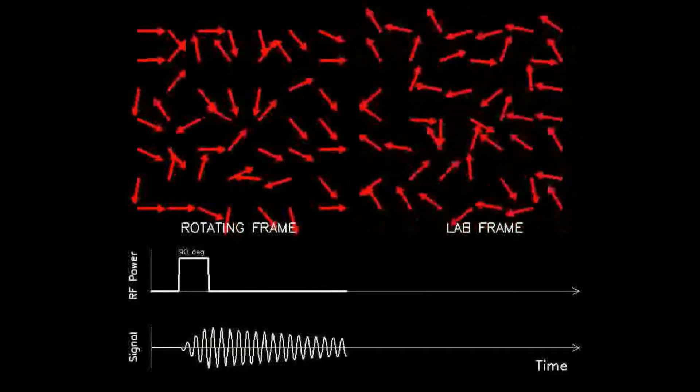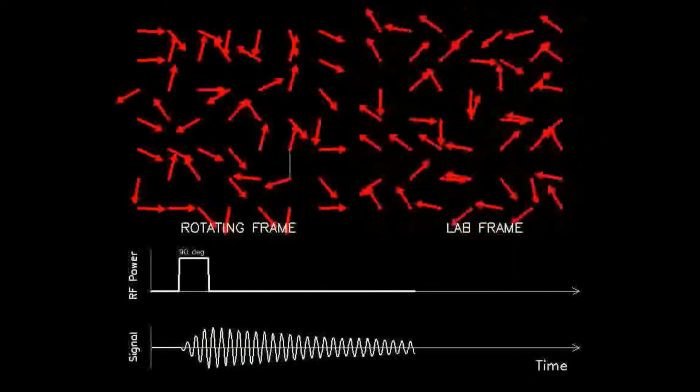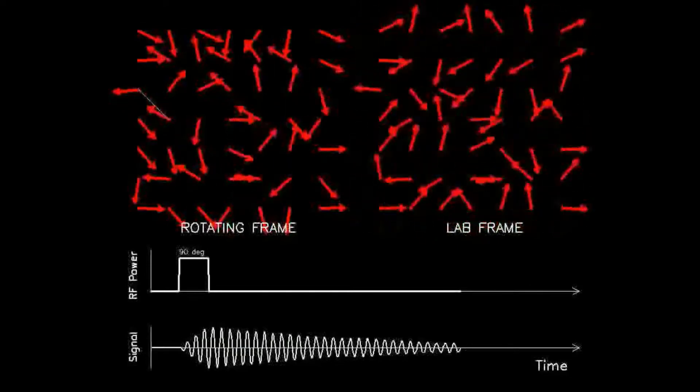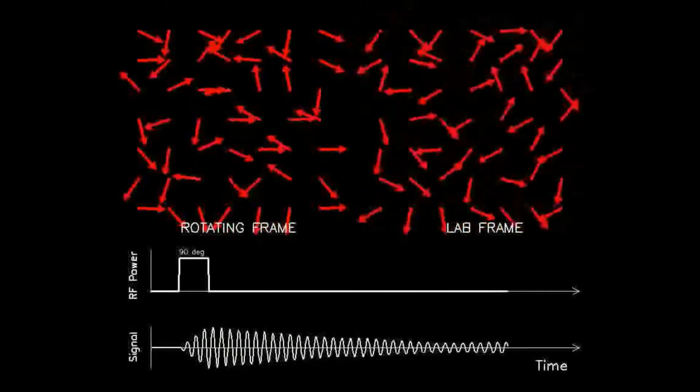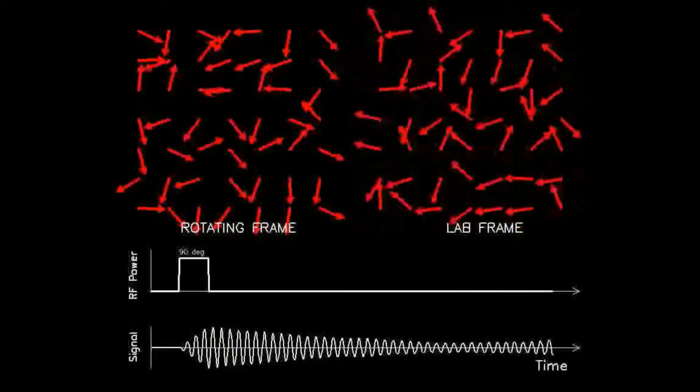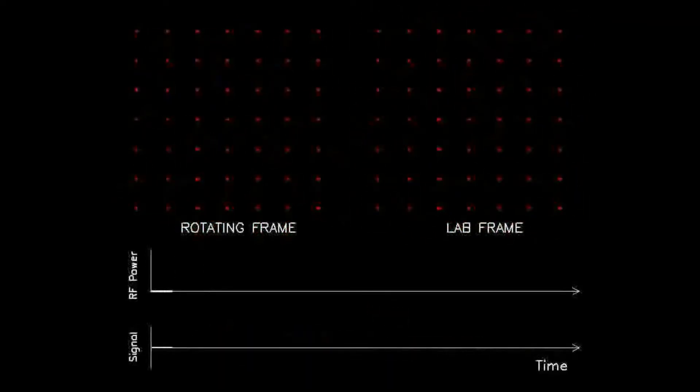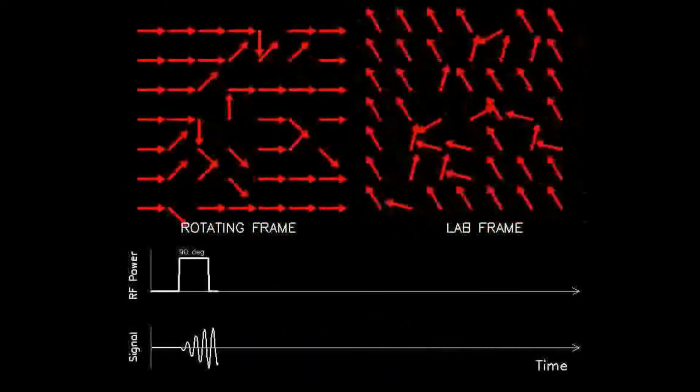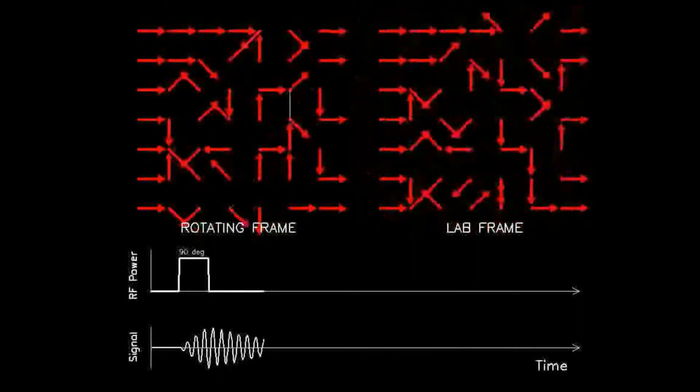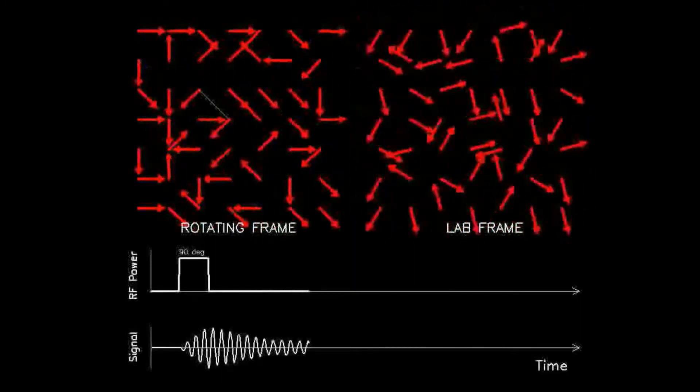Again, the top panels show an array of 7x7 dipoles viewed along the z-axis, with the top left viewed in the rotating frame and the top right viewed in the lab frame. The bottom timeline depicts the externally applied RF power that causes a 90-degree spin flip, and the top timeline depicts the detected signal.